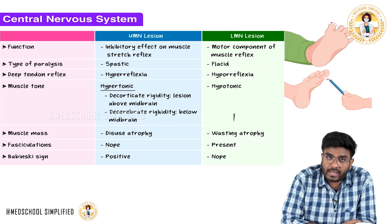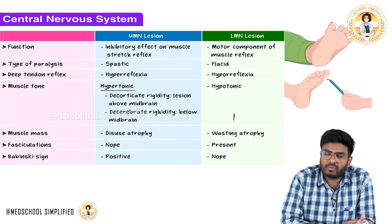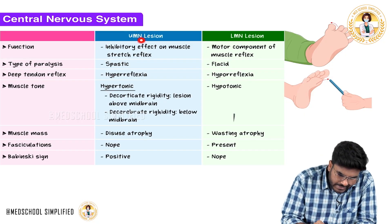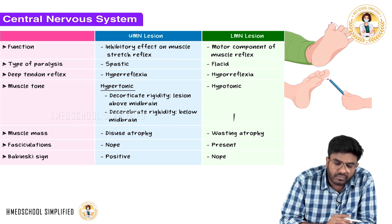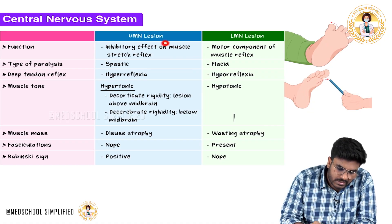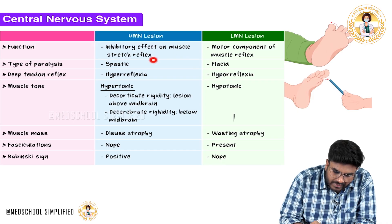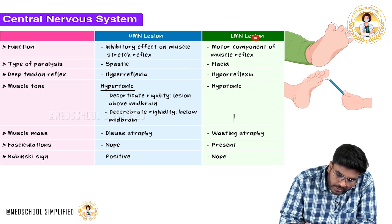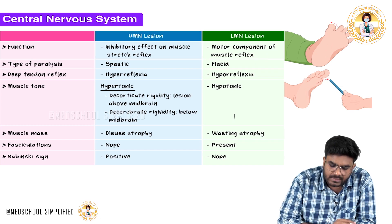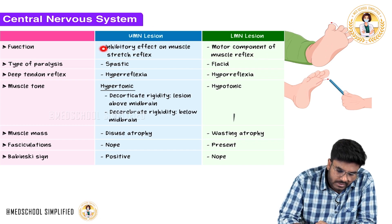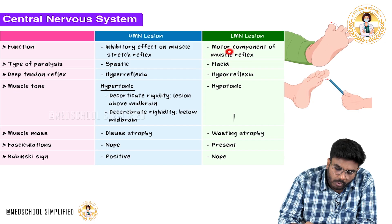If there is a lesion in the upper motor neuron, or if there is a lesion in the lower motor neuron, we will see the differences. Upper motor neurons have an inhibitory effect on the muscle stretch reflex. Lower motor neurons, on the other hand, are the motor component of the muscle reflex — they are the motor output from the spinal cord.